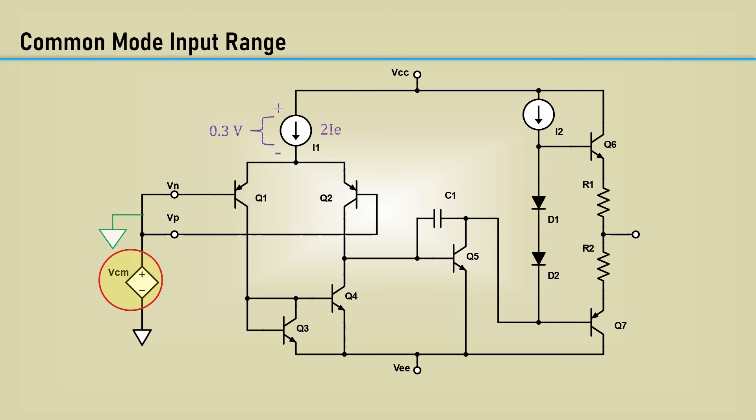There would be a typical 0.3-volt drop across the current source, and a 0.6-volt drop across the emitter-base junctions of Q1 and Q2.